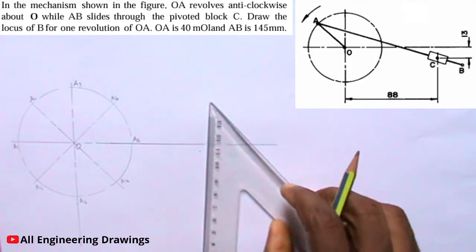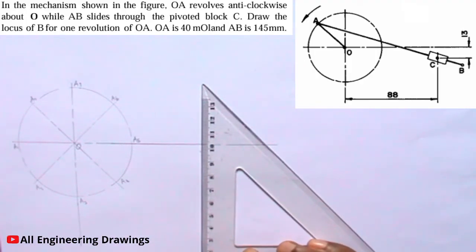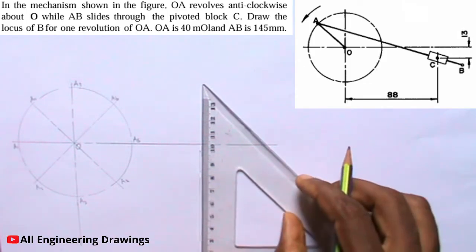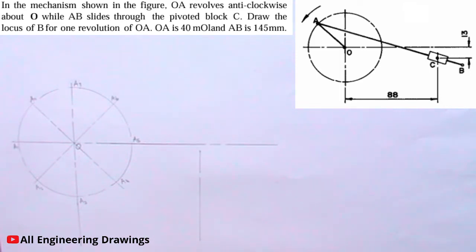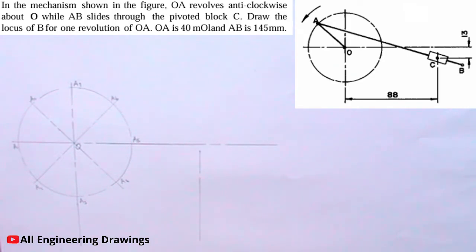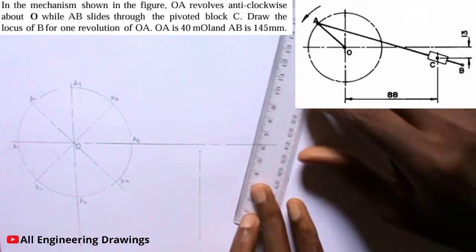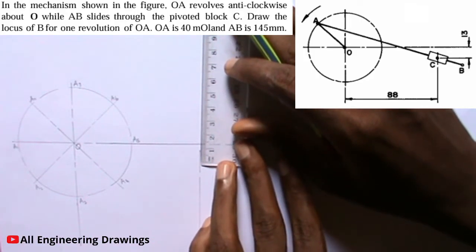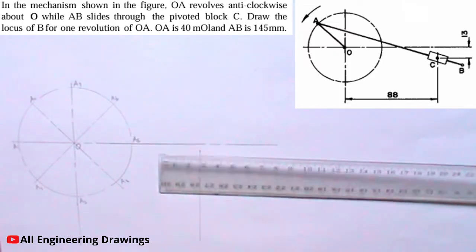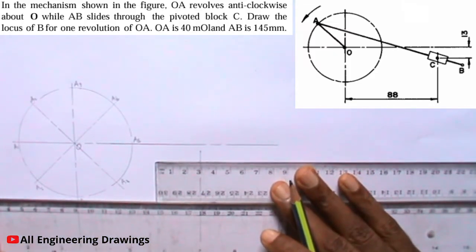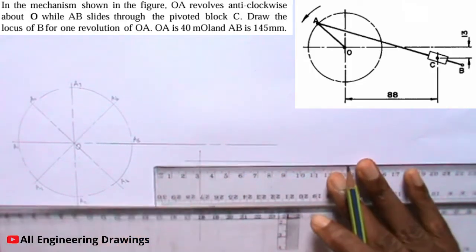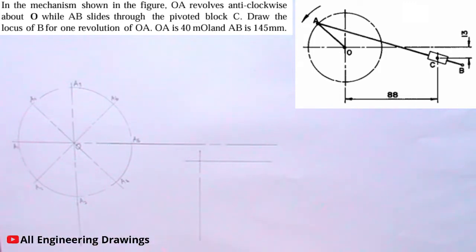Now I will draw a horizontal line 13mm from this horizontal line. The horizontal line should intersect this vertical line. I will mark a point 13mm from this one. The point where the lines intersect should be labeled C.